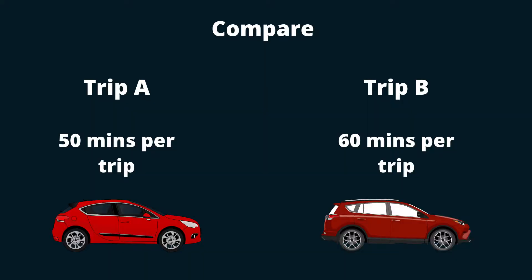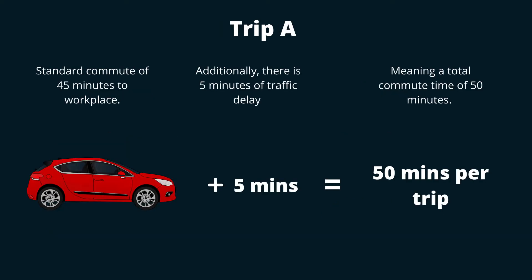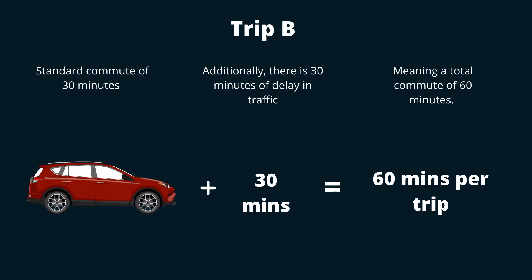An example of LOS is measuring two traffic commutes. The first person has a standard commute of 45 minutes, and they experience 5 minutes of delay in traffic, meaning they experience a total commute of 50 minutes. The second person has a standard commute of 30 minutes, but they experience 30 minutes of delay in traffic, for a total commute of 60 minutes.